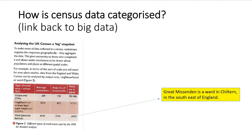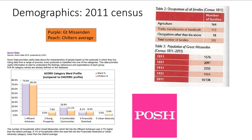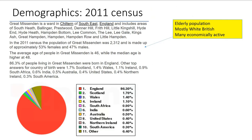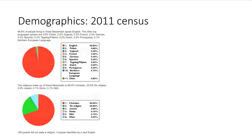Now think about the census data. Great Missenden is a ward within Chiltern in the southeast of England. On the following slides I've put lots of demographic data to see if this helps build up a picture of the lived experience. It comes across as a very affluent, upper-middle-class area. You can see on the graph how Chiltern compares to this ward. This ward is very comfortable, wealthy, aspirant, very white British, economically active, with very little diversity.